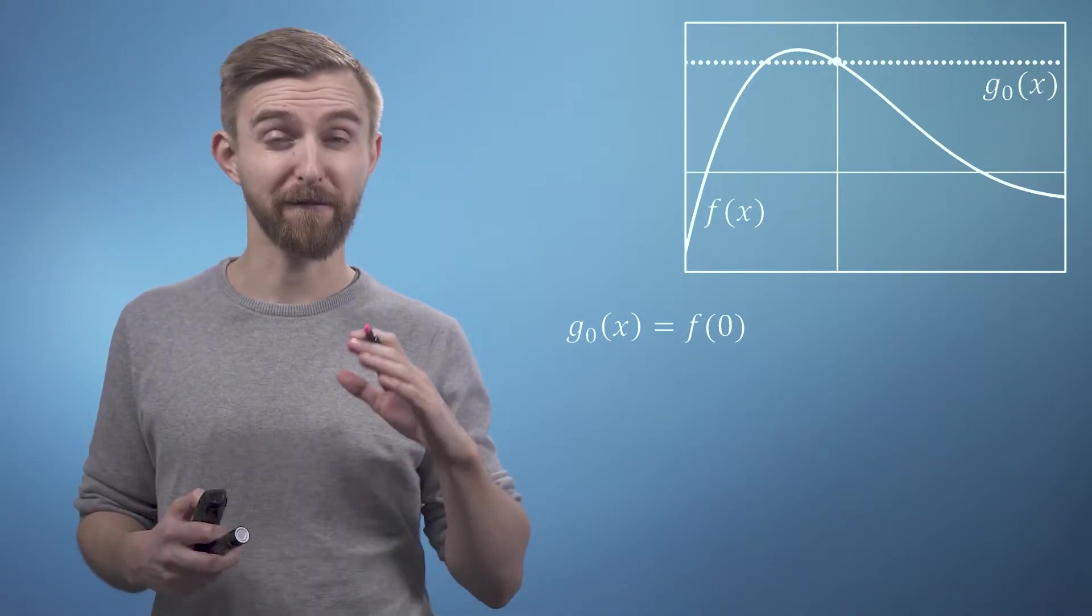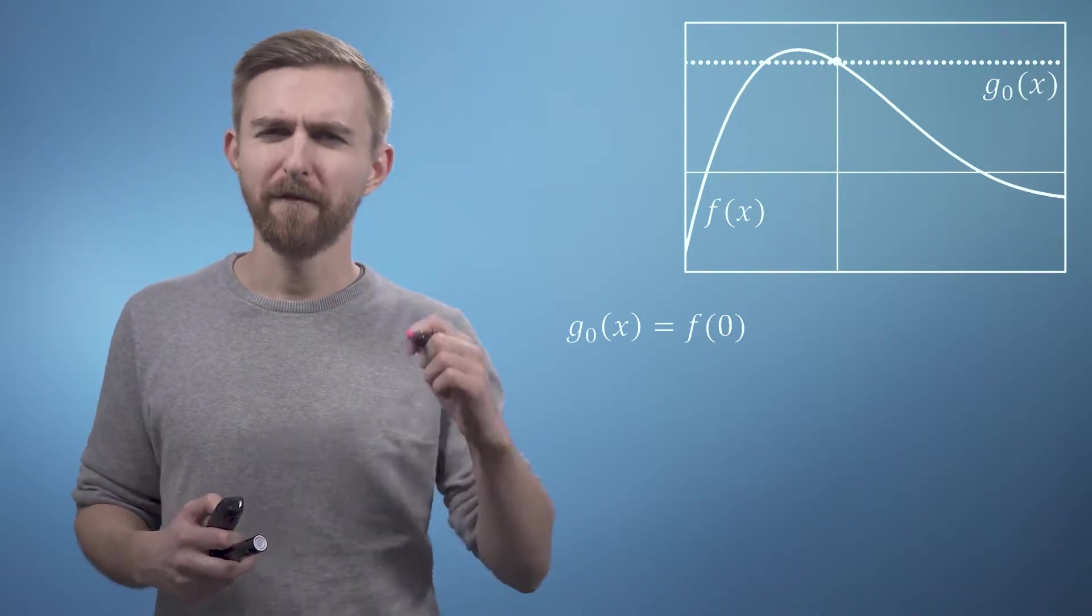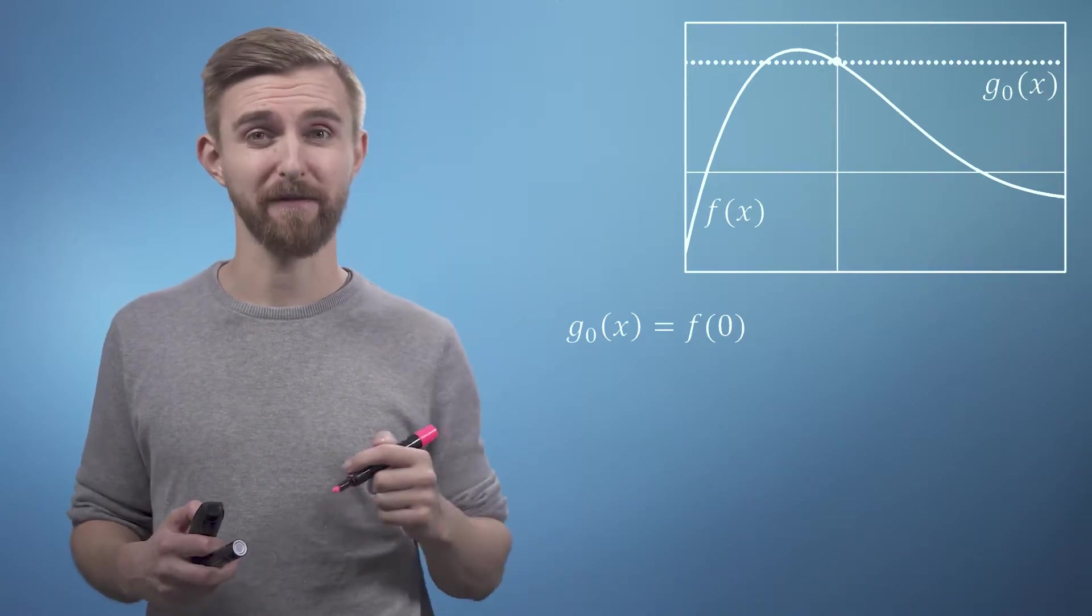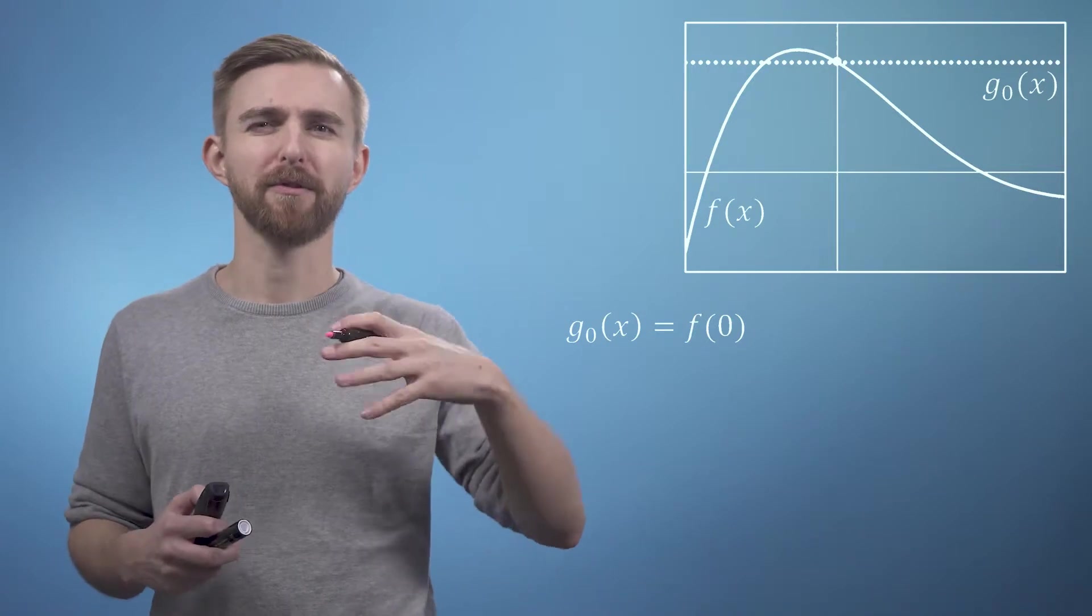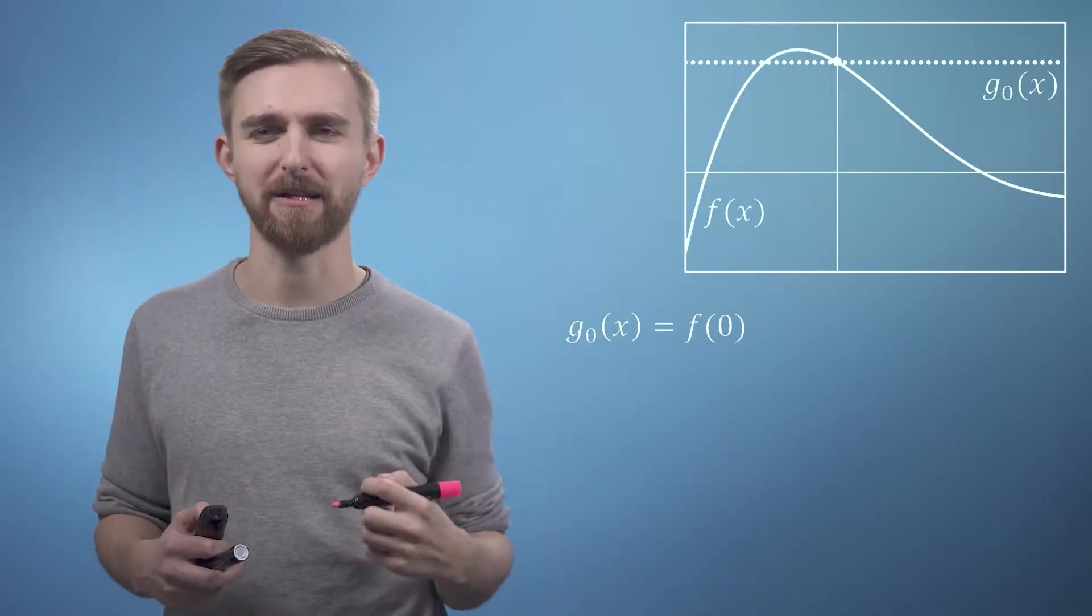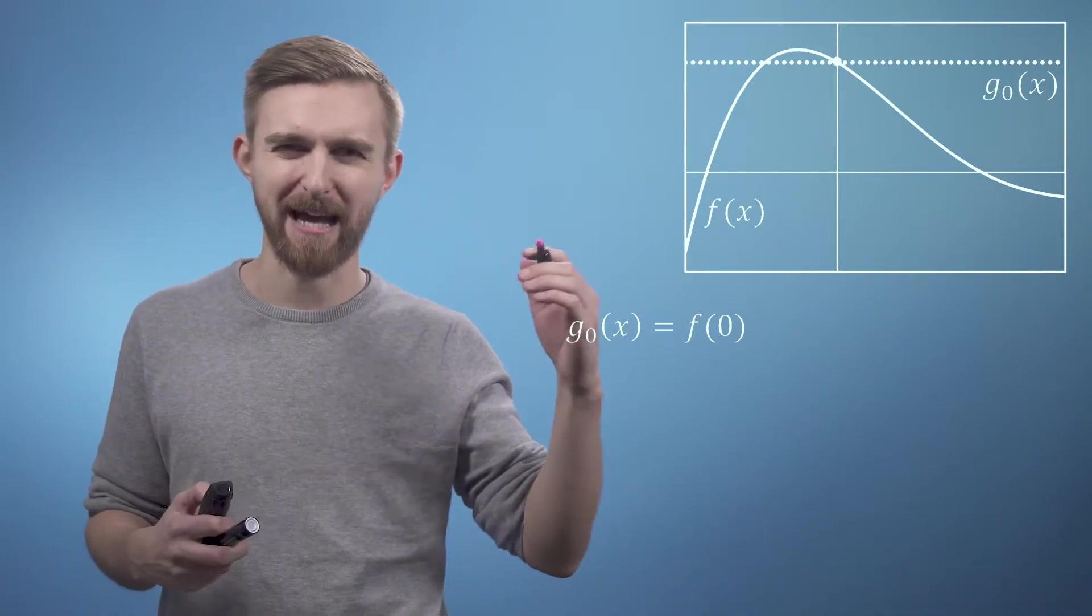So let's now find our first order approximation. For this, we're now going to use two pieces of information, the value of the function at x equals 0, but also the value of the gradient at x equals 0, which we will call f dash at 0.